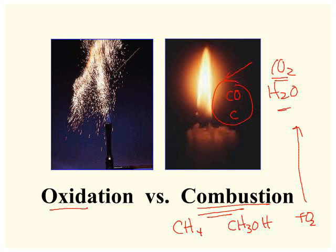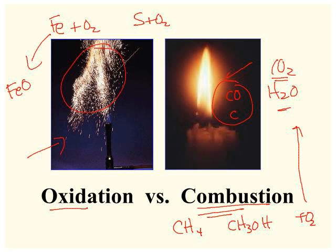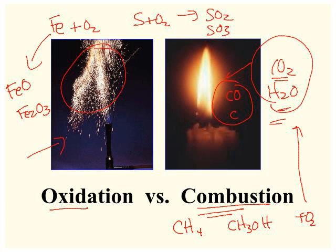Oxidation may look like combustion. There may be significant energy, but this is typically when a metal reacts with oxygen or a nonmetal reacts with oxygen to make oxides of that fuel, such as iron two oxide or iron three oxide or sulfur dioxide or sulfur trioxide. Combustion produces carbon dioxide and water.